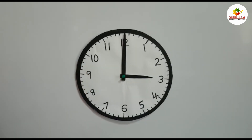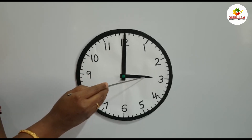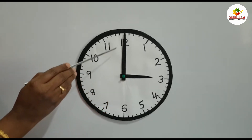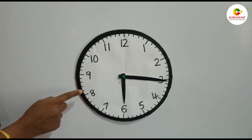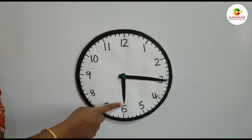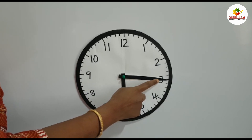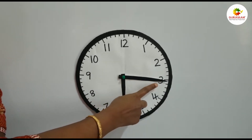Now let's read the time using both the hour hand and the minute hand. The minute hand points to 12 and the hour hand points to 3. The time is 3 o'clock. Now can you read the time? The hour hand is pointing towards 6 and the minute hand is pointing towards 3. That means the time is 6:15.